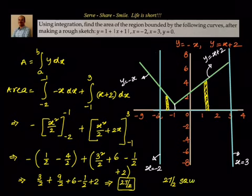So the area is 27/2 square units. Now we can cross-check this geometrically to verify we are getting the same area.